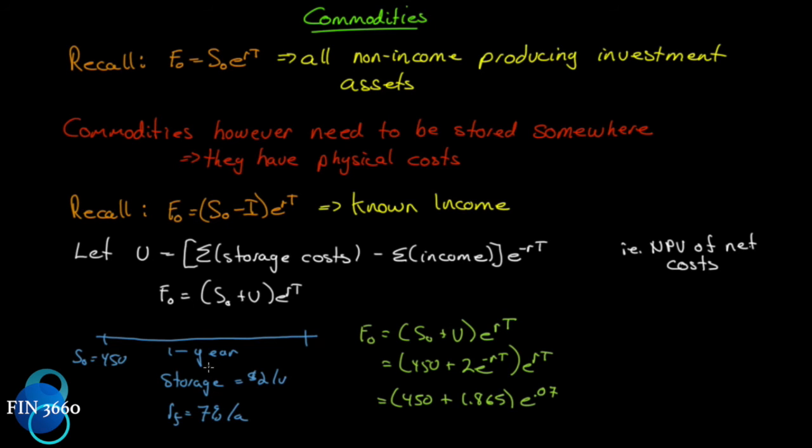So if we were setting up an arbitrage argument for this, we would need to borrow the $450 for the spot, plus we would need to borrow a certain amount of money to pay for the carry - I keep using the word carry - to pay for the storage cost. That's part of the cost of carry, by the way. So the futures price today, given the spot price and the cost of storage, is $484.63.